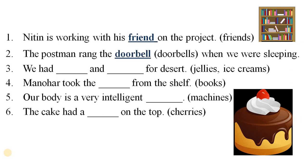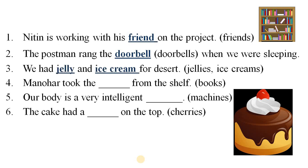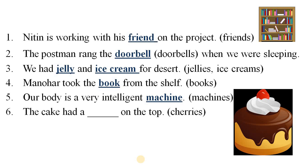Next: we had blank and blank for dessert — the words are jellies and ice cream, so the answer is: we had jelly and ice cream for dessert. Next: Manuvar took the blank from the shelf — the word is books, and the answer is: Manuvar took the book from the shelf. Next: our body is a very intelligent blank — the word is machines, so the answer is: our body is a very intelligent machine. The last is: the cake had a blank on the top — the word is jellies, and the answer is: the cake had a cherry on the top.